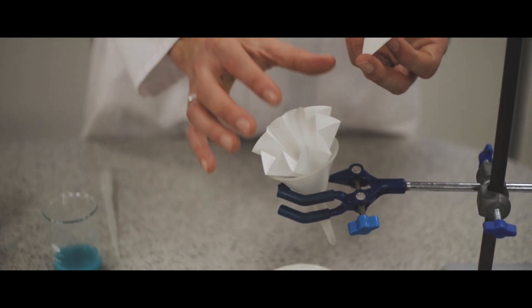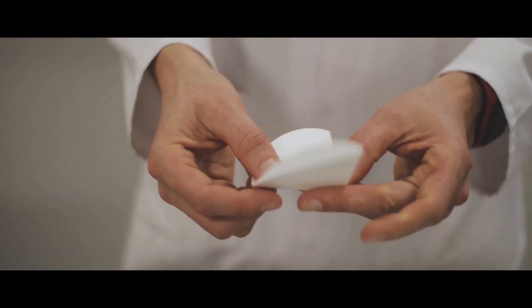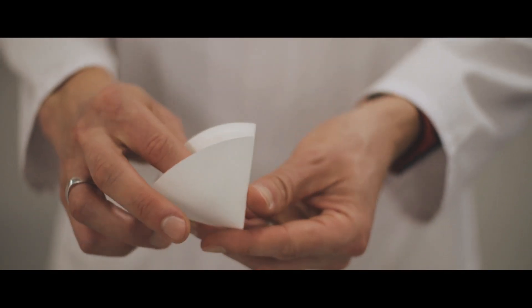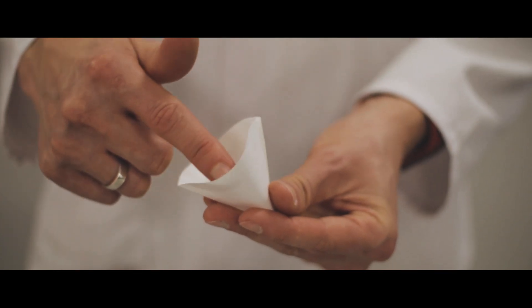So here I've got a funnel and I've got some filter paper. Now we can fold the filter paper in a couple of ways. We can fold it in half and in half again and open it up like so, but we really want as much surface area of the filter paper as possible.